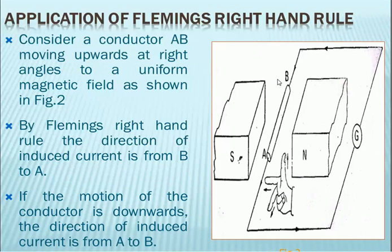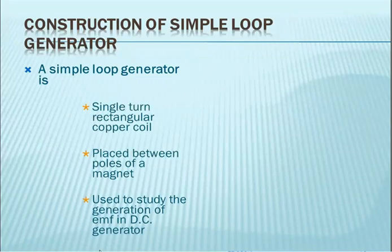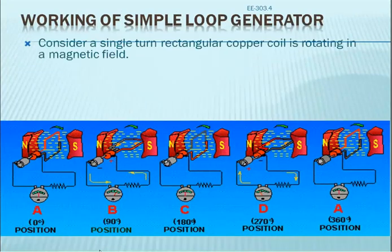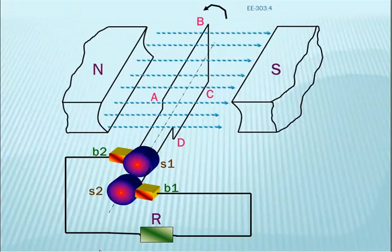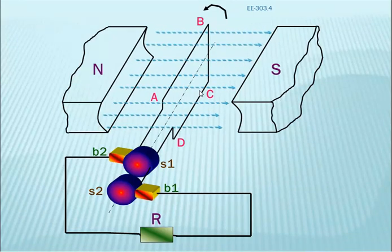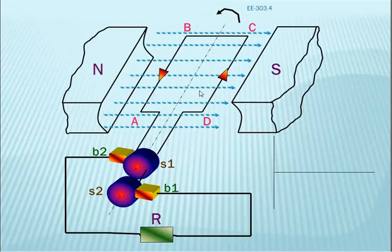In the simple loop generator: the motion of the conductor is in the downward direction. The north pole and south pole define the direction. In the first position, conductor AB energy is zero — at the start of rotation, the EMF generated is zero at 0 degrees.